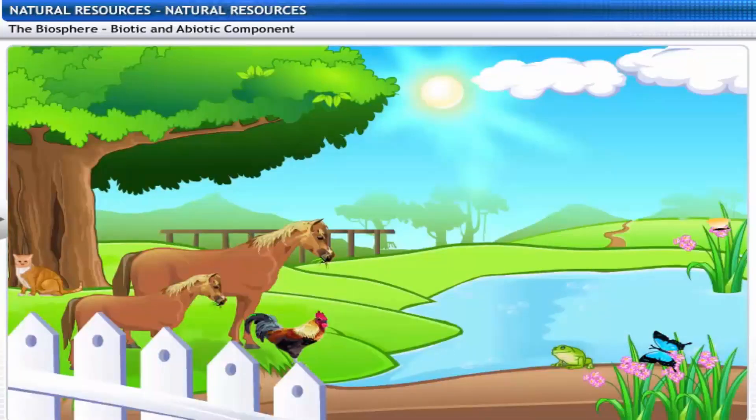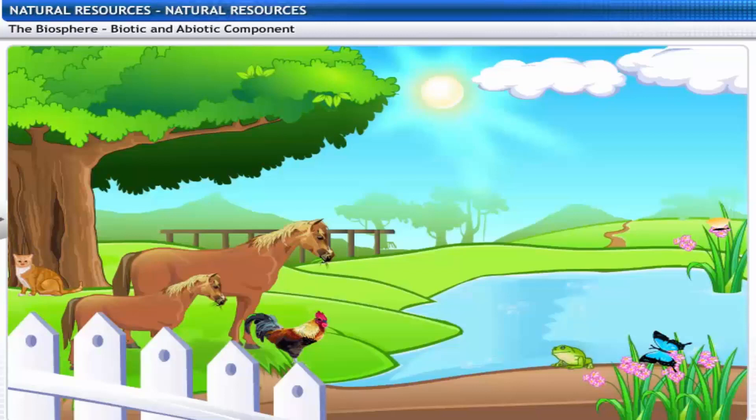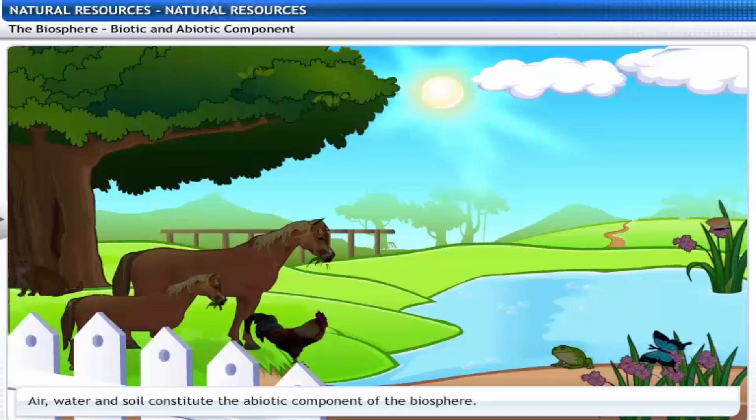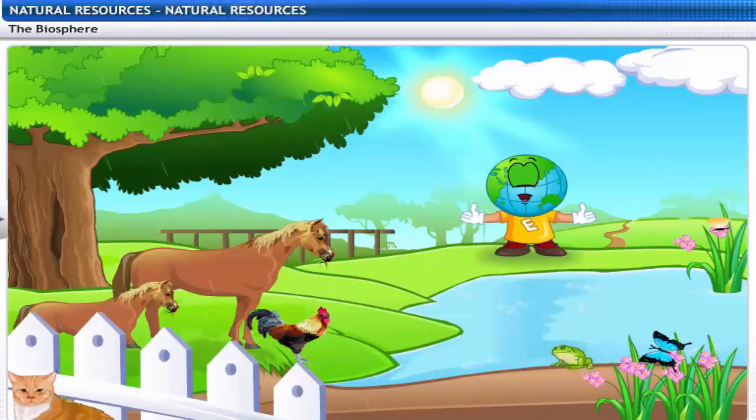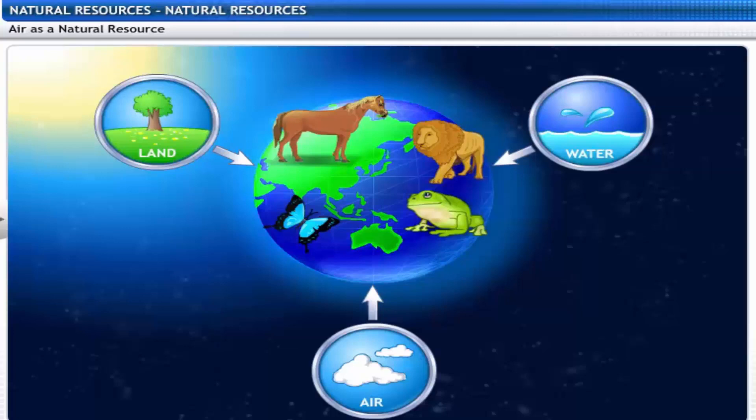The biosphere has two components, biotic and abiotic. Living organisms constitute the biotic component of the biosphere. Air, water and soil constitute the abiotic component of the biosphere. So that means the biotic and abiotic components need each other, right? Living organisms need air, water and soil to live. The biotic component utilizes natural resources like land, water and air to survive.